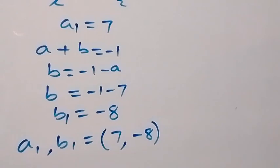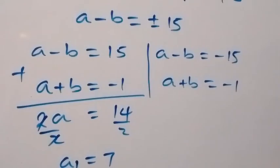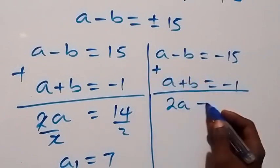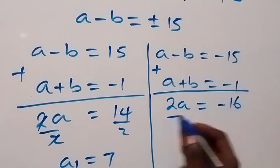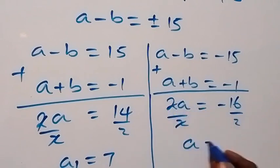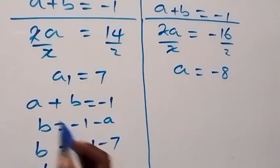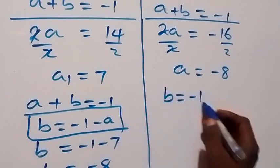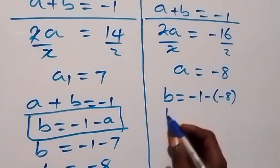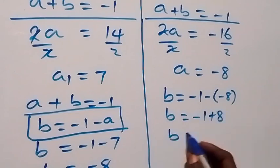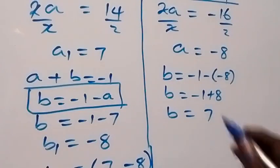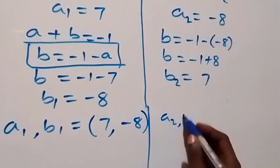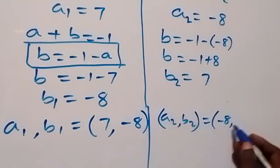For the second case, solving a minus b equals minus 15 simultaneously with a plus b equals minus 1, adding gives 2a equals minus 16. Dividing by 2, a equals minus 8. Then b equals minus 1 minus minus 8, which is minus 1 plus 8, so b equals 7. The second solution is a₂ comma b₂ equals minus 8 comma 7.